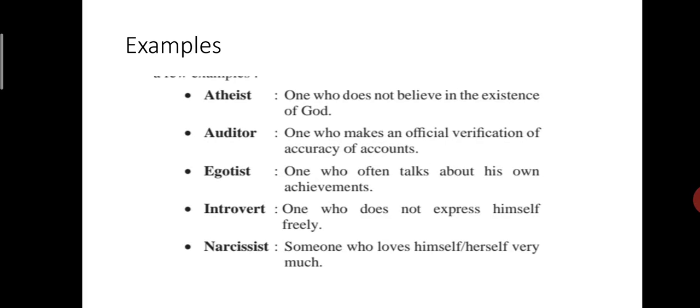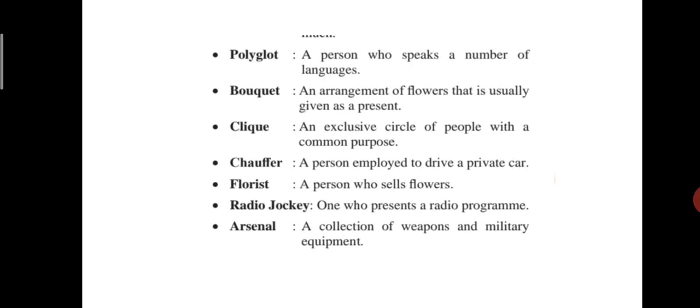Next, introvert. One who does not express himself freely. Next, narcissist. That is someone who loves himself or herself very much. Next example. Polyglot. That is a person who speaks a number of languages. Boutique. An arrangement of flowers. Boutique. An arrangement of flowers that is usually given as a present.